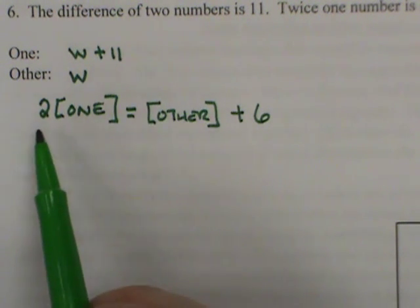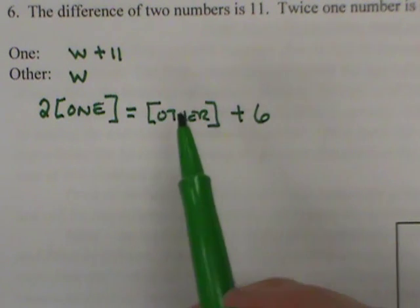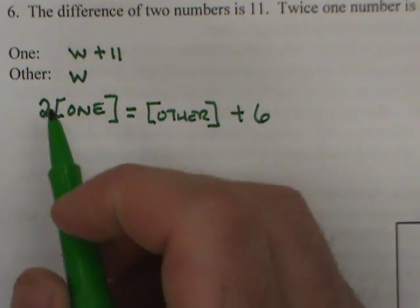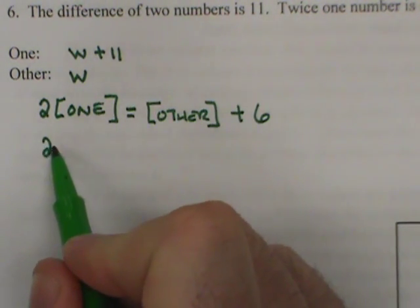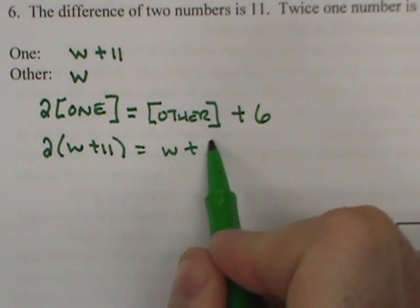So I have my broken English: twice one number is six more than the other number. I'm going to plug the expressions in and solve. This will be two times W plus 11 equals W plus six.